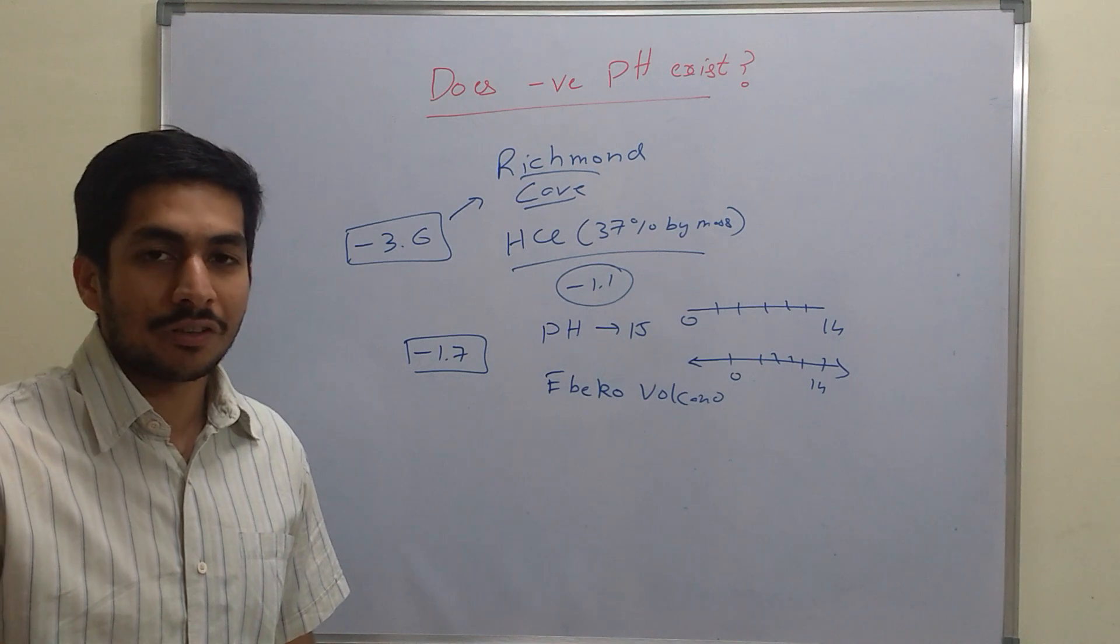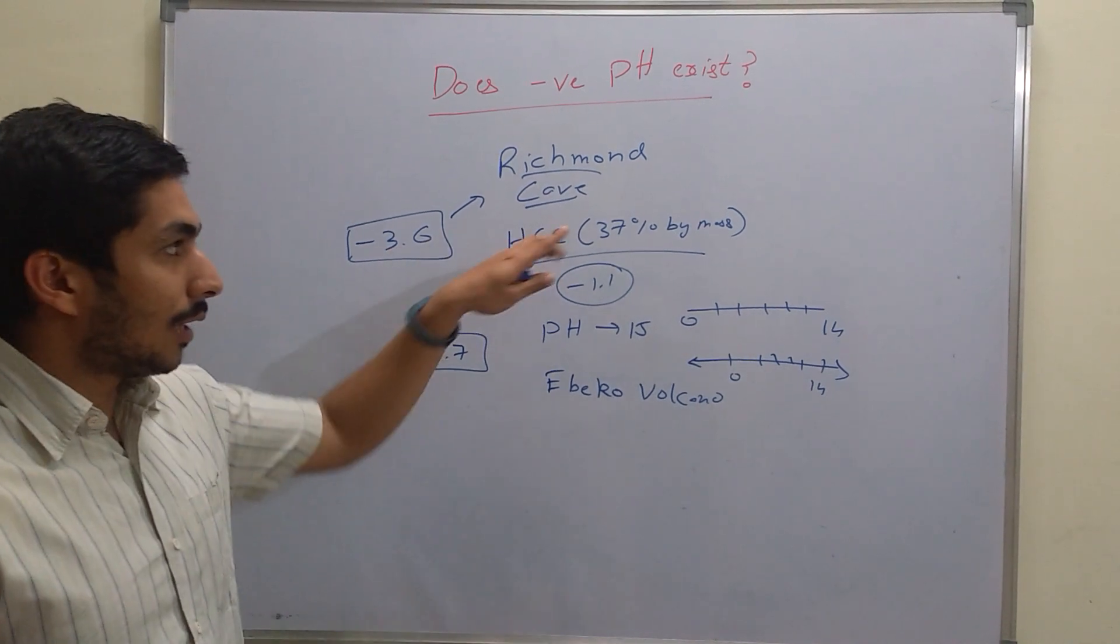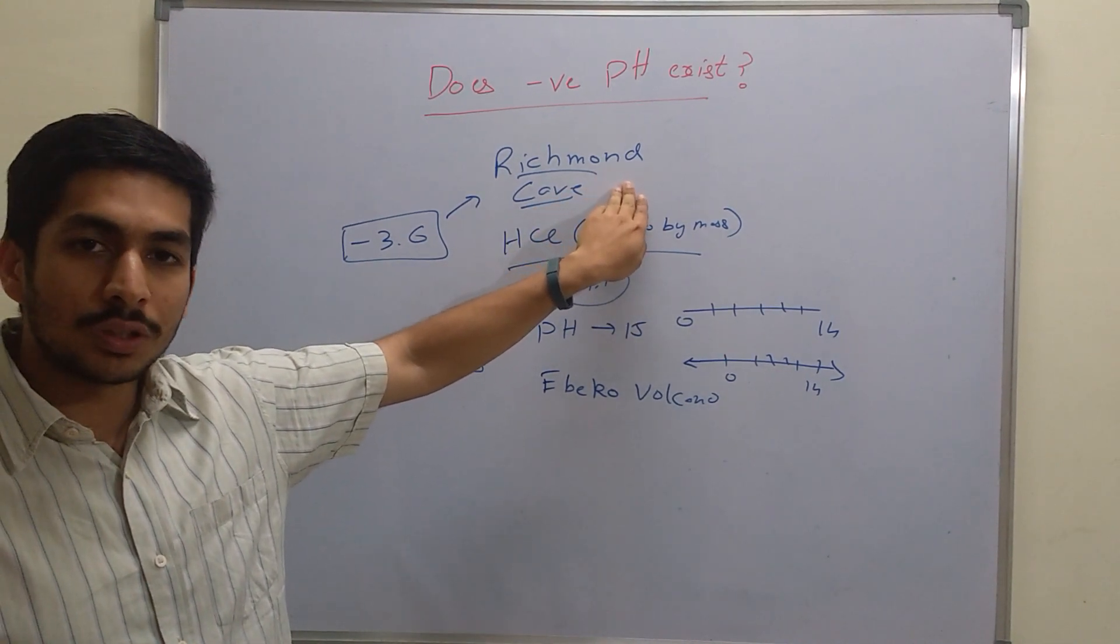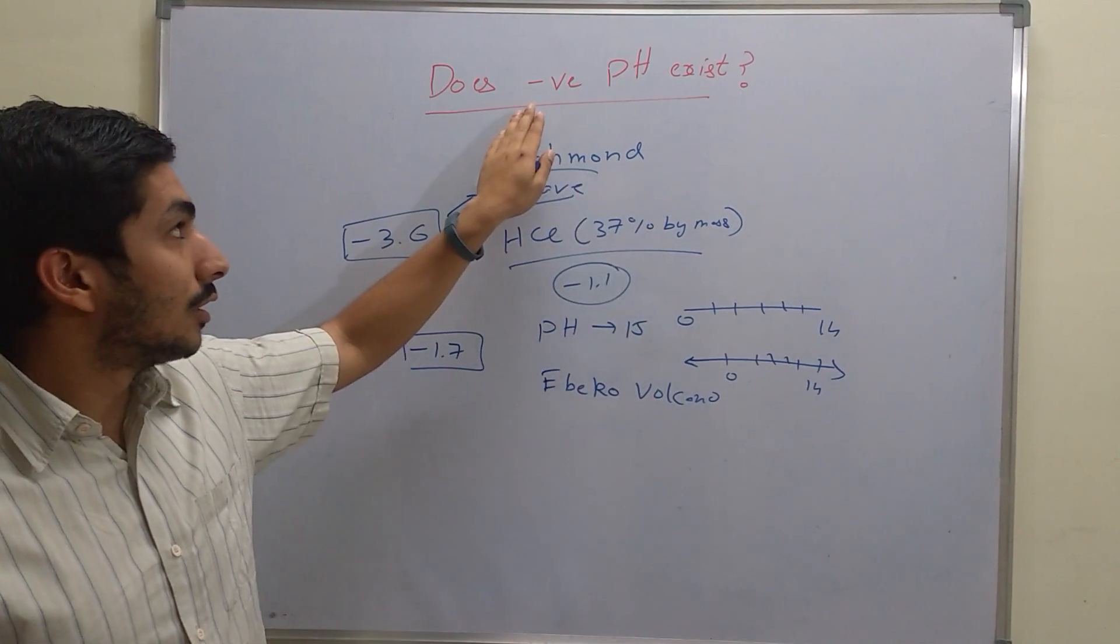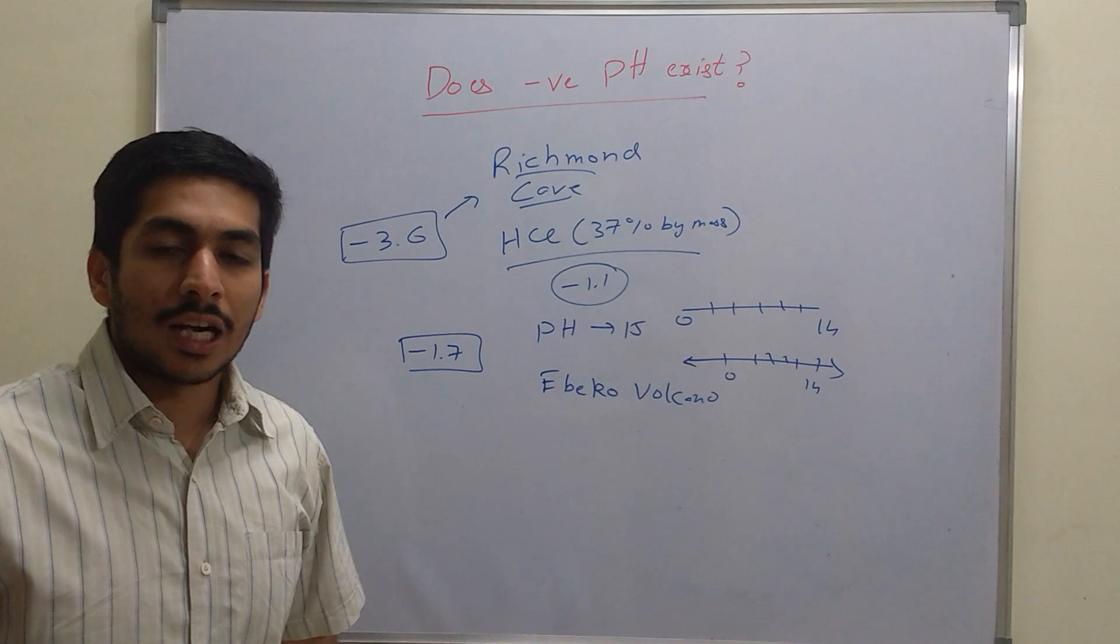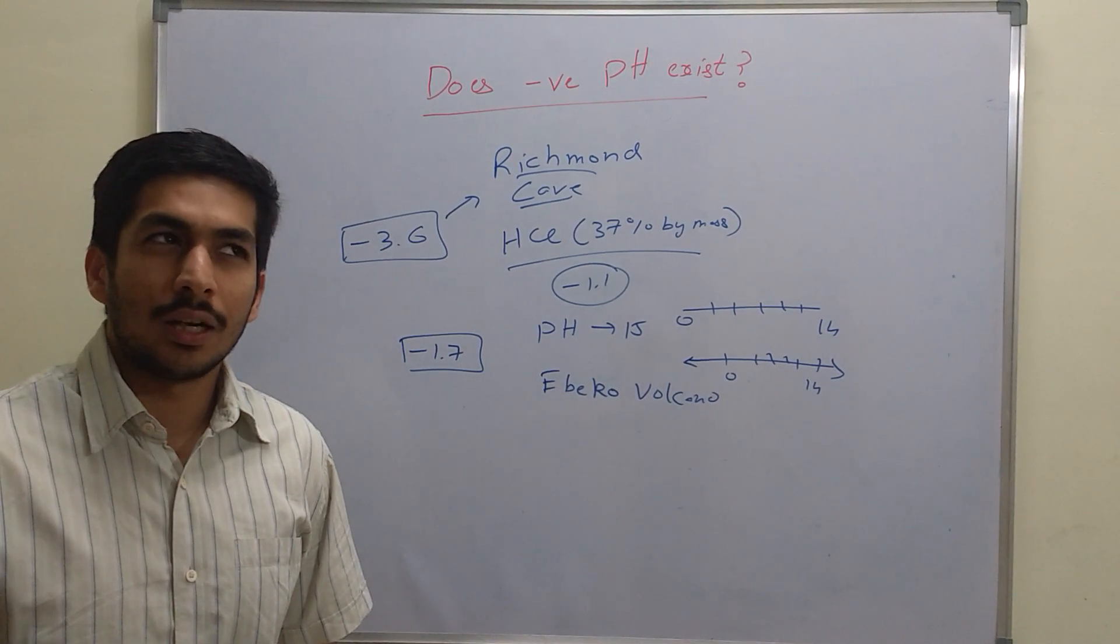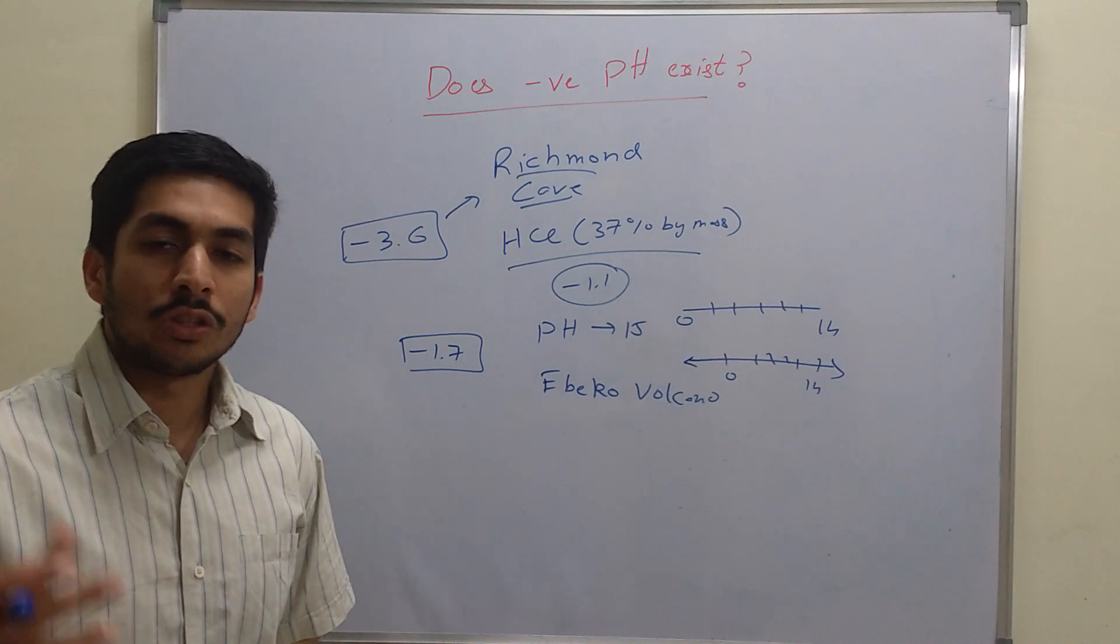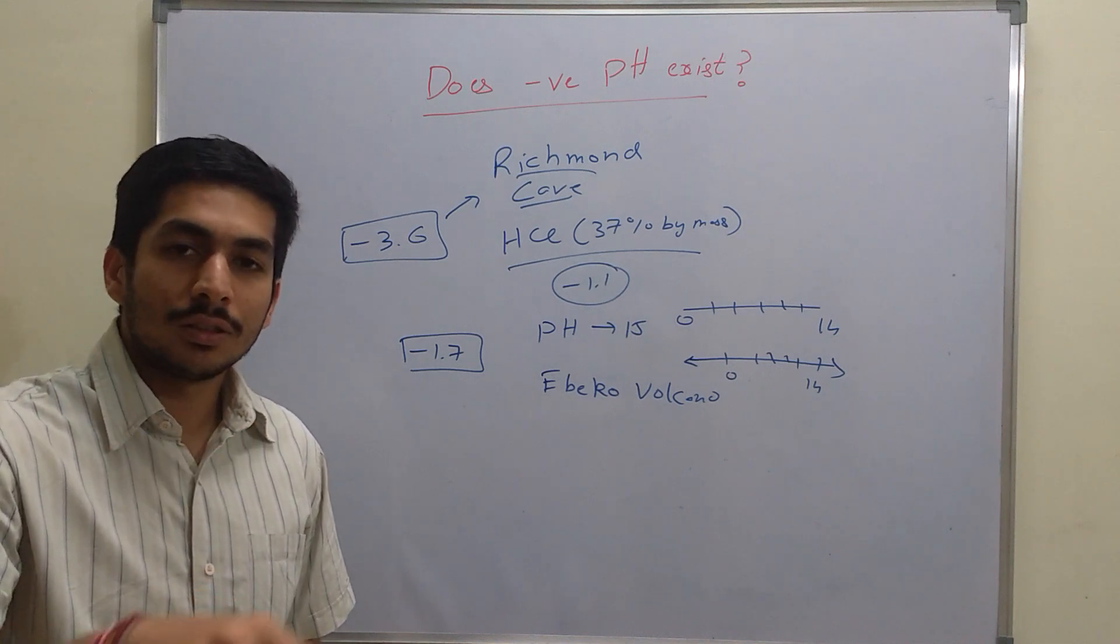You should know some facts like this. If you do know some interesting facts, you could comment down below. Regarding the Richmond cave article, this was published in the year 2000, and there's another article on does negative pH exist published in 2006 in the Journal of Chemical Education by the American Chemical Society.